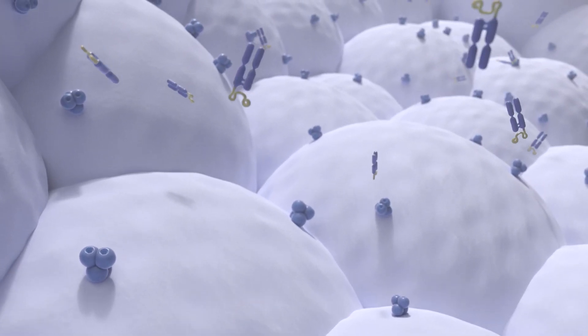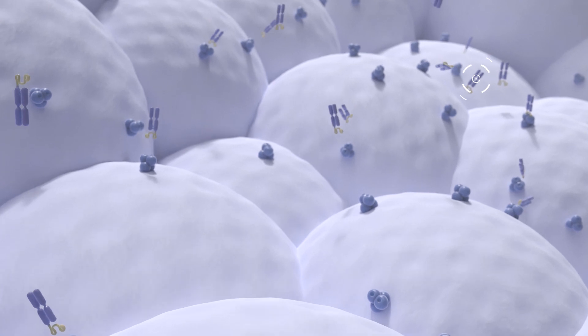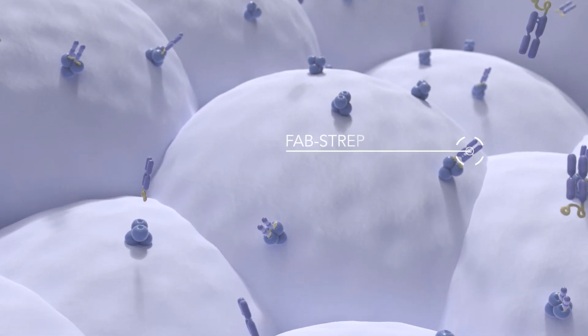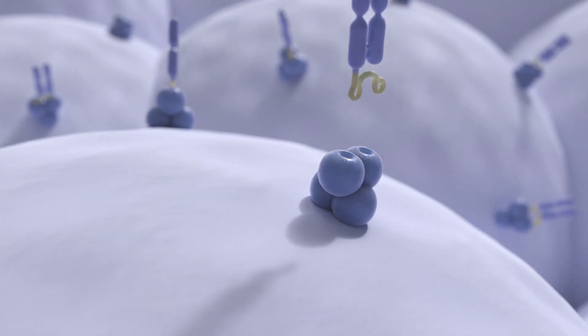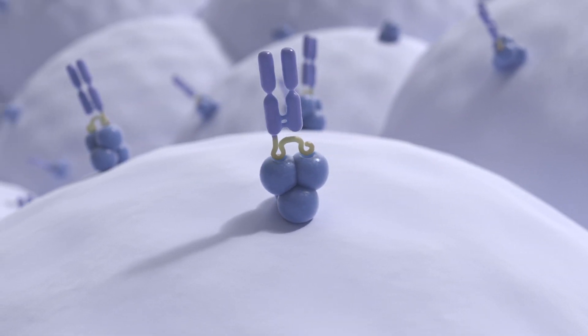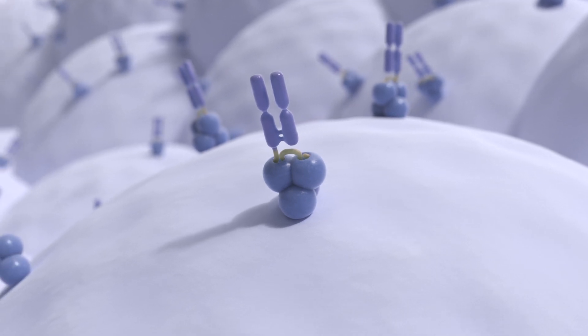Low affinity fab fragments harboring a Streptag, so-called fab streps, are attached to this matrix. And this multimerization of the fab streps promotes their binding to target cells with high avidity.